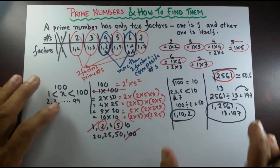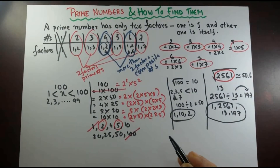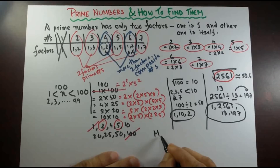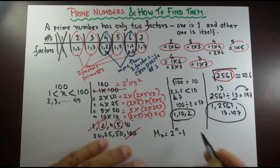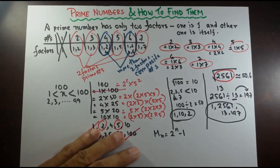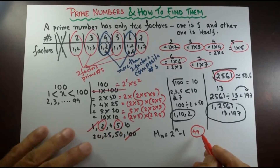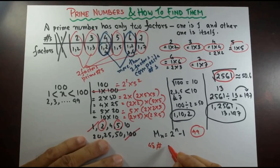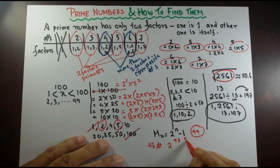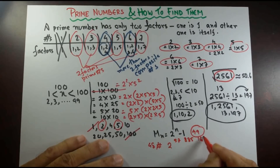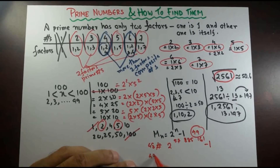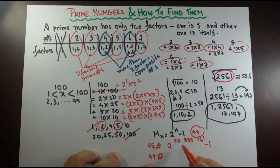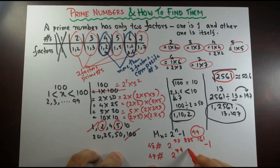There are other ways to find prime numbers. One is called Mersenne primes, named after French scholar Marin Mersenne. The formula is M = 2 to the power n minus 1. This is a very interesting way to find prime numbers. Until now there are 49 Mersenne prime numbers. The 48th is 2 to the power 57,885,161 minus 1, and the 49th is 2 to the power 74,207,281 minus 1.